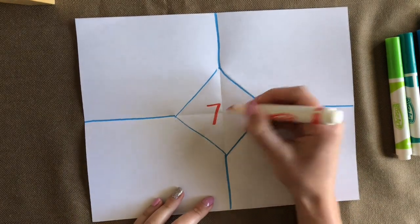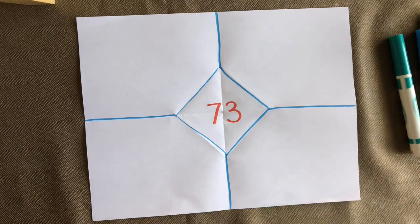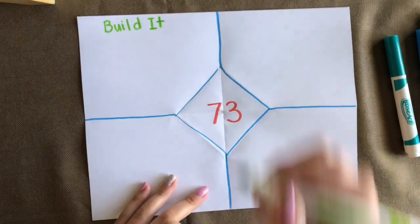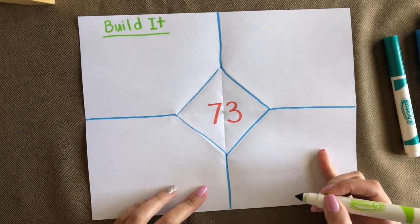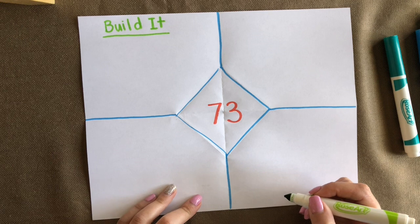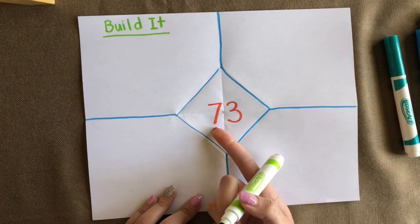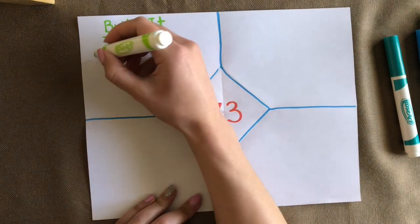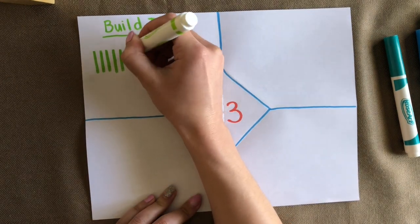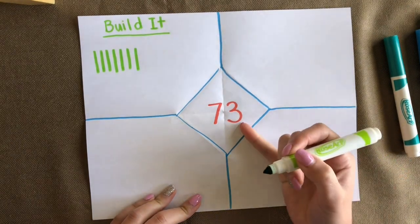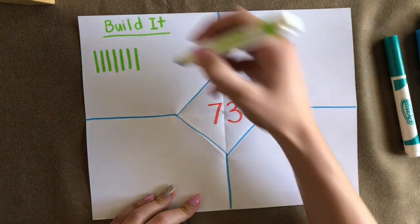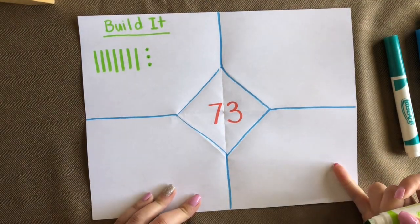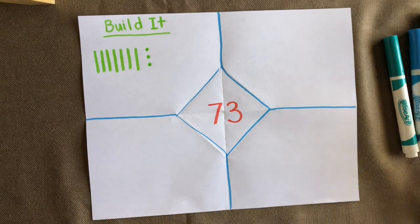Let's start with a two-digit number — let's say our number is 73. In the first box, we're going to build it using base 10 blocks. Remember, we represent tens with lines and ones with dots. The tens digit is seven, which stands for 70, so we show seven tens: one, two, three, four, five, six, seven. In the ones place we have three, so there are three ones: one, two, three. That is how we represent 73 using base 10 blocks.